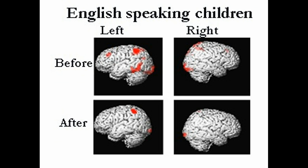Results from the Reading Acceleration Program in English-speaking children showed greater and more focused activation on the left side of the brain, the side that is more involved in reading.